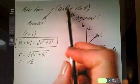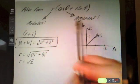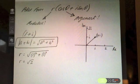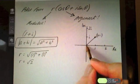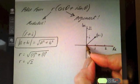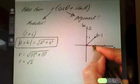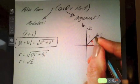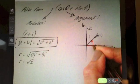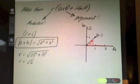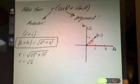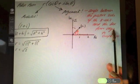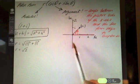Now we need to find θ, our angle, which is called the argument. The argument is always the angle between the positive sense of the x-axis (the real axis) and the line from the origin to your complex number. You always measure going from the positive x-axis to that line — that is the argument.